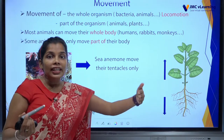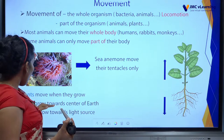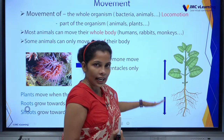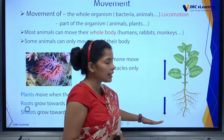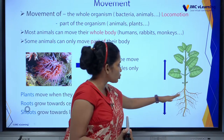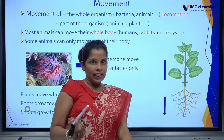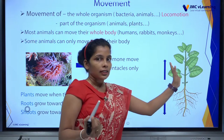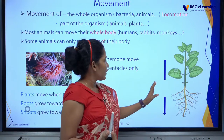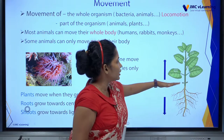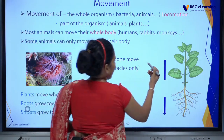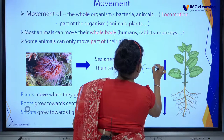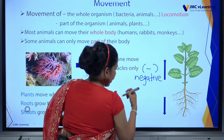When we consider gravity in the downward direction, roots grow towards the earth — we call this positive geotropism. The shoot part grows away from the earth — away from gravity. We consider this the negative direction. So shoots show negative geotropism and roots show positive geotropism.